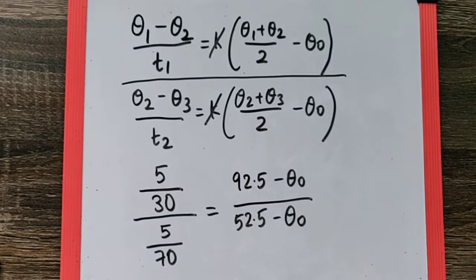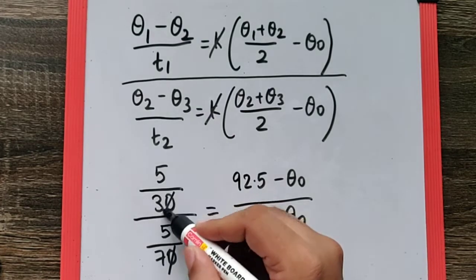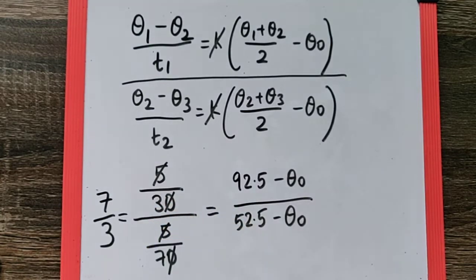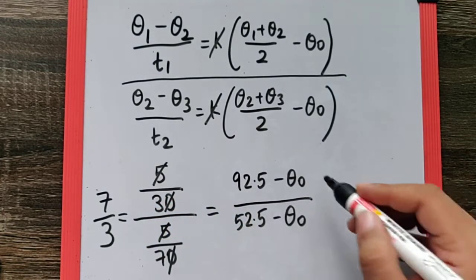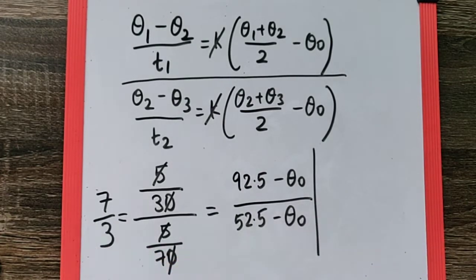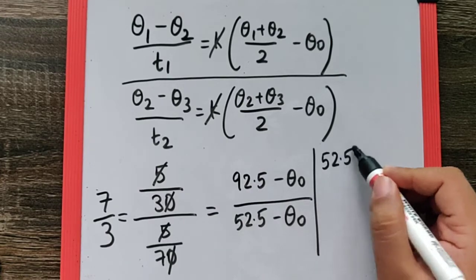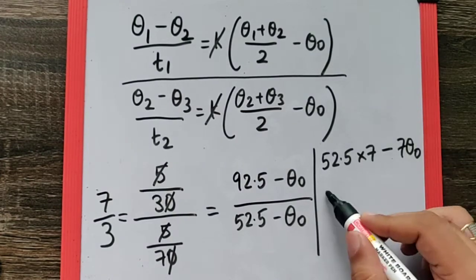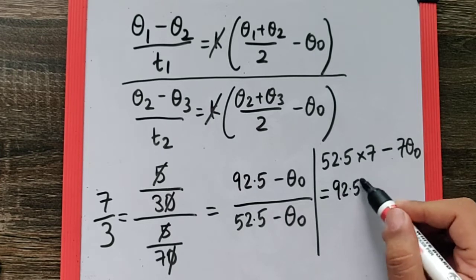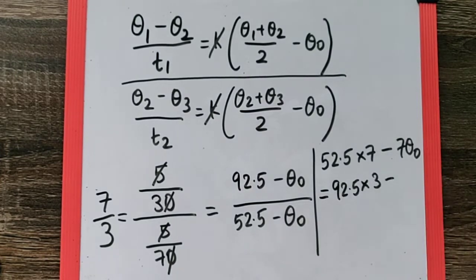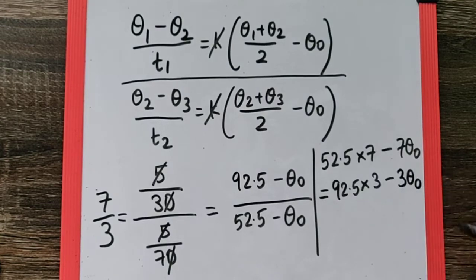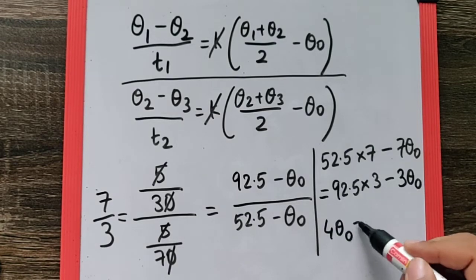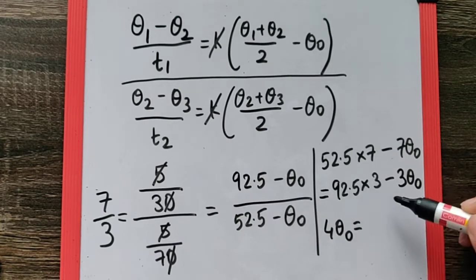Now we need to first solve this to get the surrounding temperature. We can get rid of this zero and the 5, that makes this ratio as 7 by 3. Now we need to go for the cross multiplication, that will give me 52.5 into 7 minus 7 times theta naught is equal to 92.5 into 3 minus 3 theta naught. If we take 7 theta naught on this side, 7 theta naught minus 3 theta naught is 4 theta naught, which is equal to 52.5 into 7 minus 92.5 into 3.